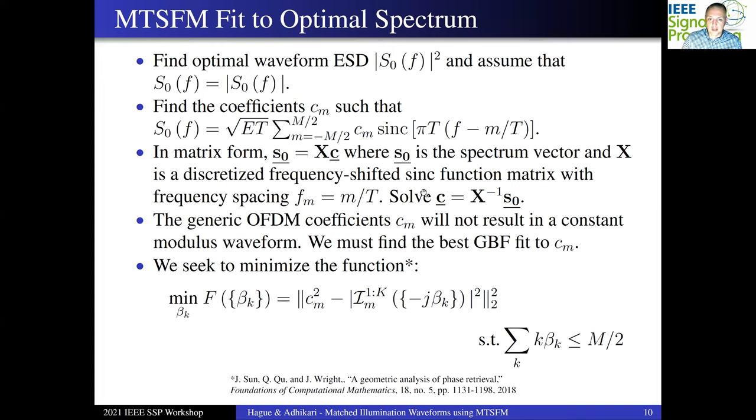These are generic OFDM coefficients, however, and they will not result in a constant modulus waveform. In order to get that, we must find the best generalized Bessel function fit to C sub M. These generic OFDM coefficients will be real, but not necessarily positive. And the generalized Bessel functions can be complex and can actually have a rather complicated phase structure. So what we're going to do is minimize the L2 metric between the magnitude square of the generic OFDM coefficient C sub M and the generalized Bessel functions. And we're going to do that by modifying these modulation indices and minimizing this L2-type metric.